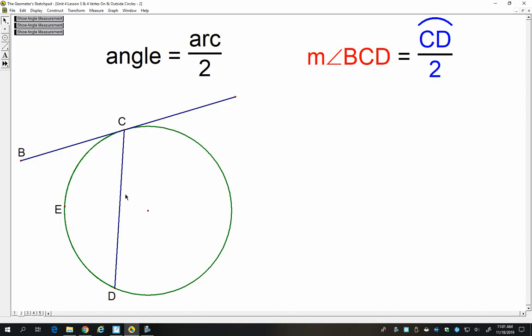And it looks like this. Here I have chord CD, and one of its endpoints is the place where tangent BC touches the circle. That's called a point of tangency. And so they create this angle BCD. And that angle intercepts this arc CD. Again, I had to throw a third point in there so I can measure it. And so they have the same relationship as an inscribed angle and its intercepted arc. The angle is equal to the arc divided by two.